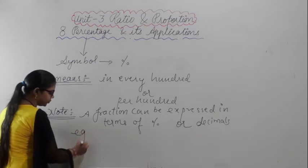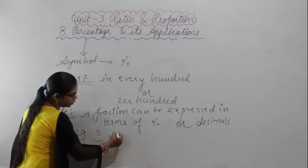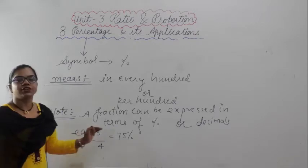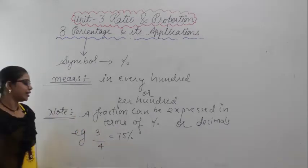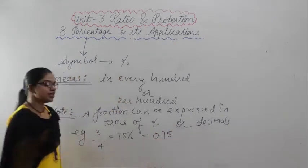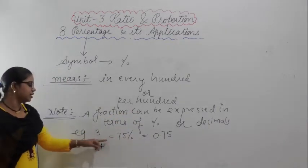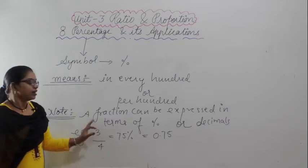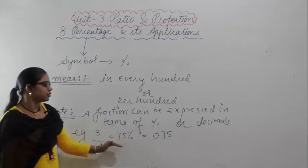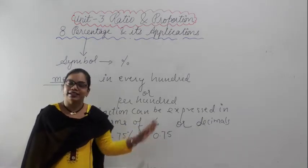For example, 3/4 will be equal to 75%. If I take out the percentage for this, it will be equal to 75%, or I can write this as 0.75 in decimal. This is a fraction — if I take out the percent it is 75%, and its decimal form is 0.75.